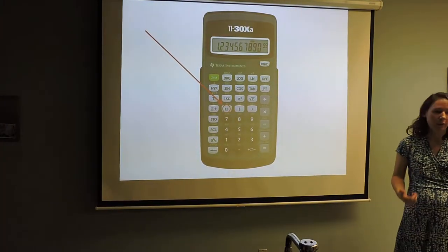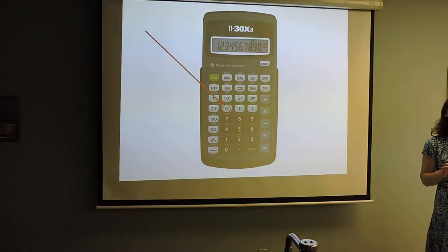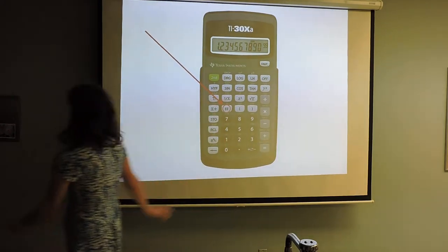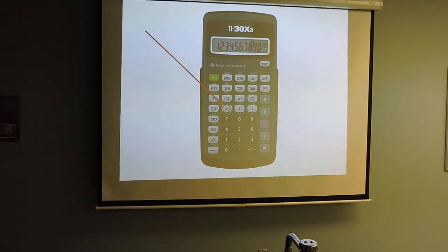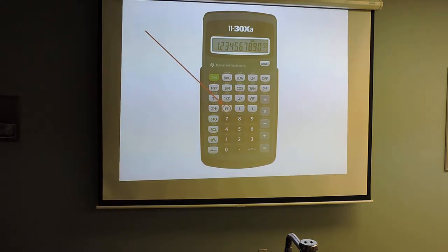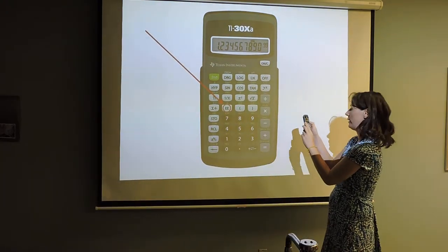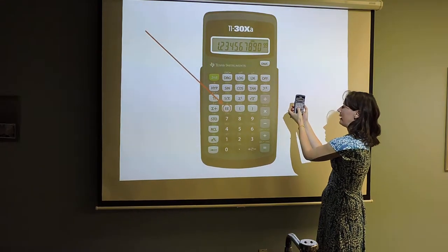On your calculator, there's a button that will enter the exponent for you. This is the TI-30XA, available at our bookstore and other places. If you have this calculator, there's a button called EE. So if I'm trying to enter 4.3 times 10 to the third, I would type 4.3 EE 3.